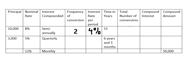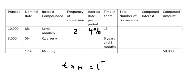Next, total number of conversions. To find this, we take T — the number of years — and multiply by N, the frequency of conversion. We have T equal to 15, multiplied by 2, which gives us 30.